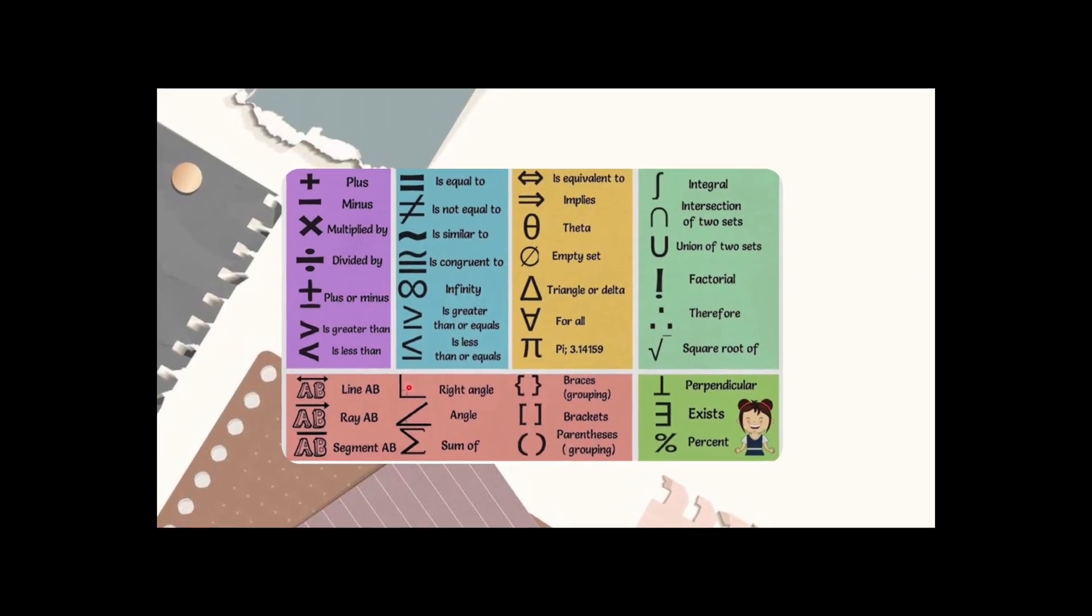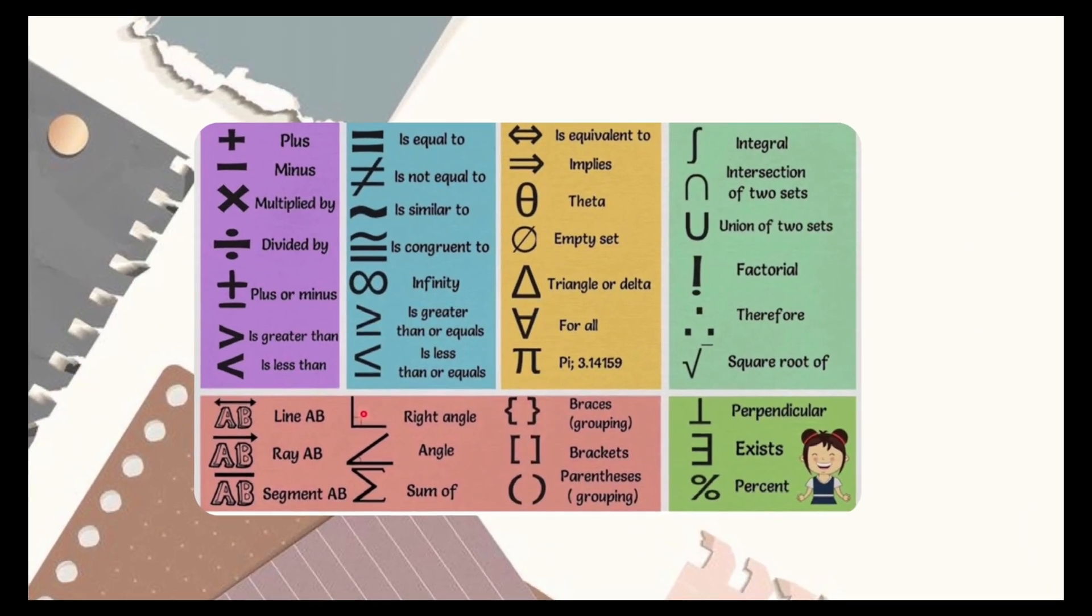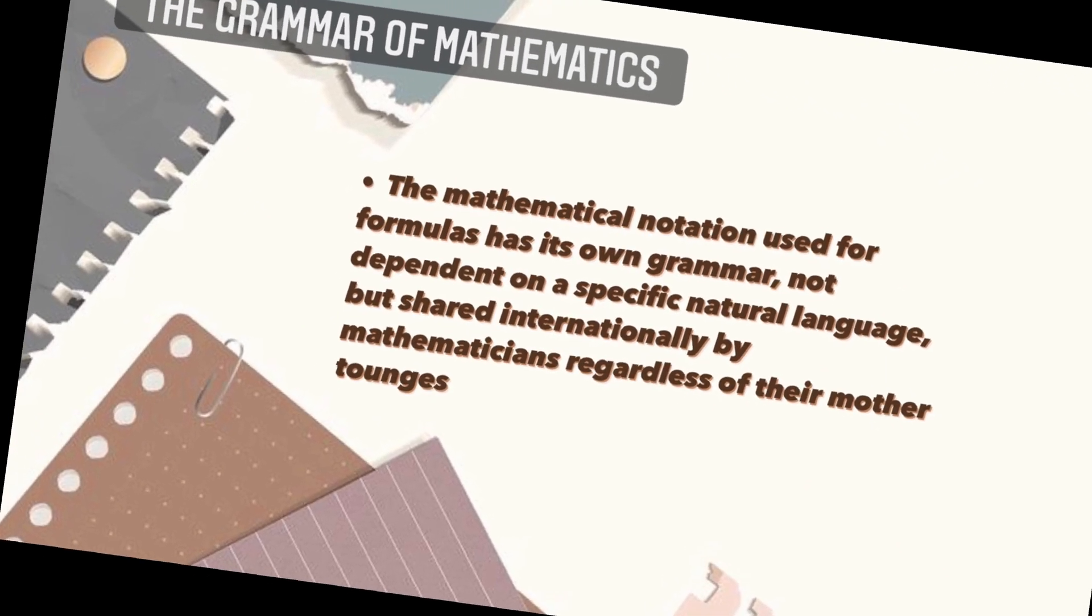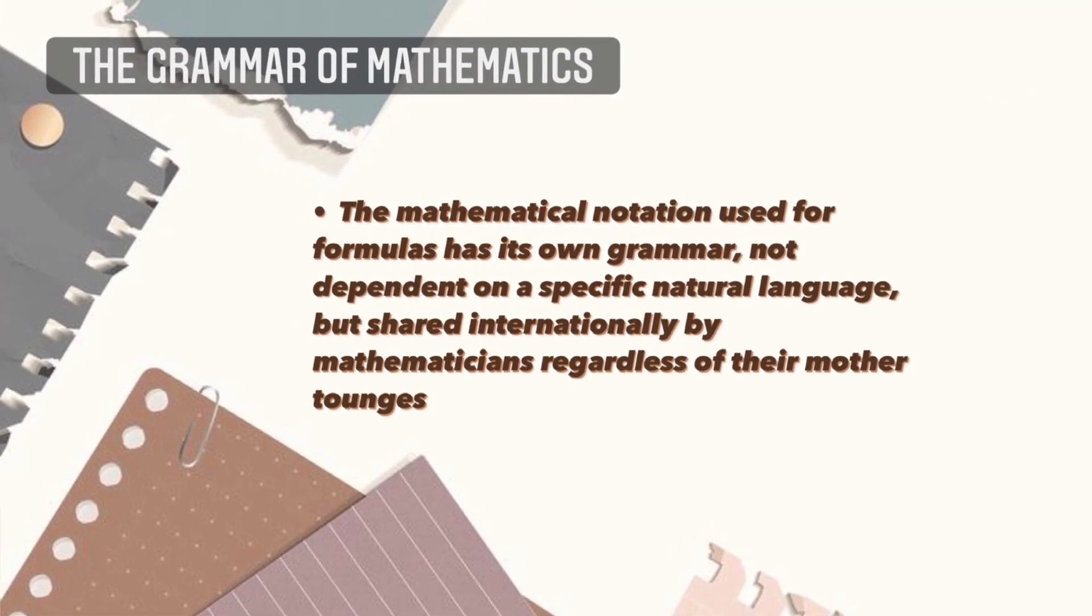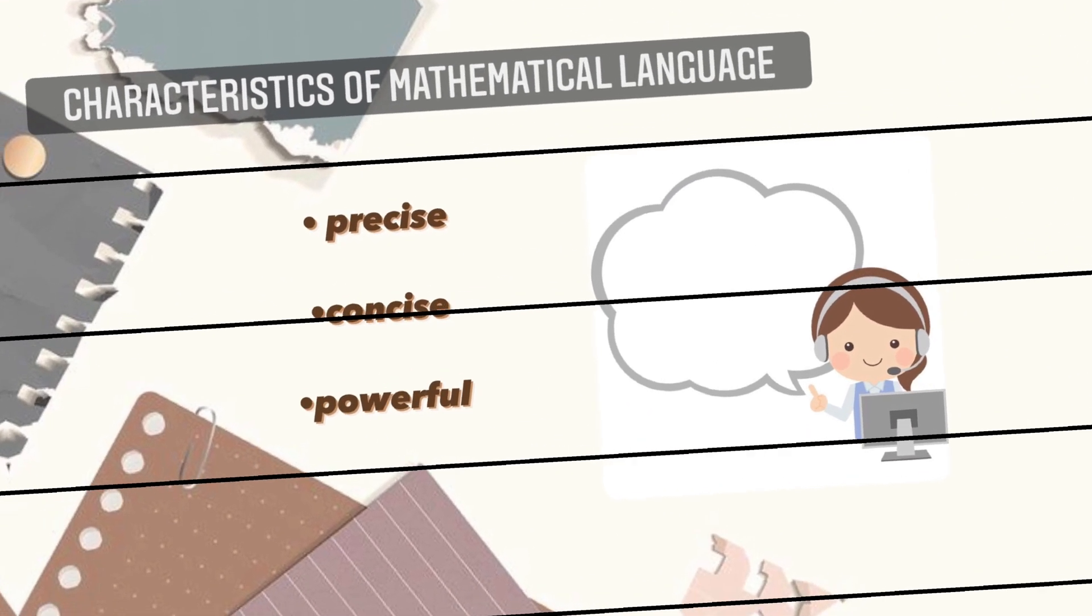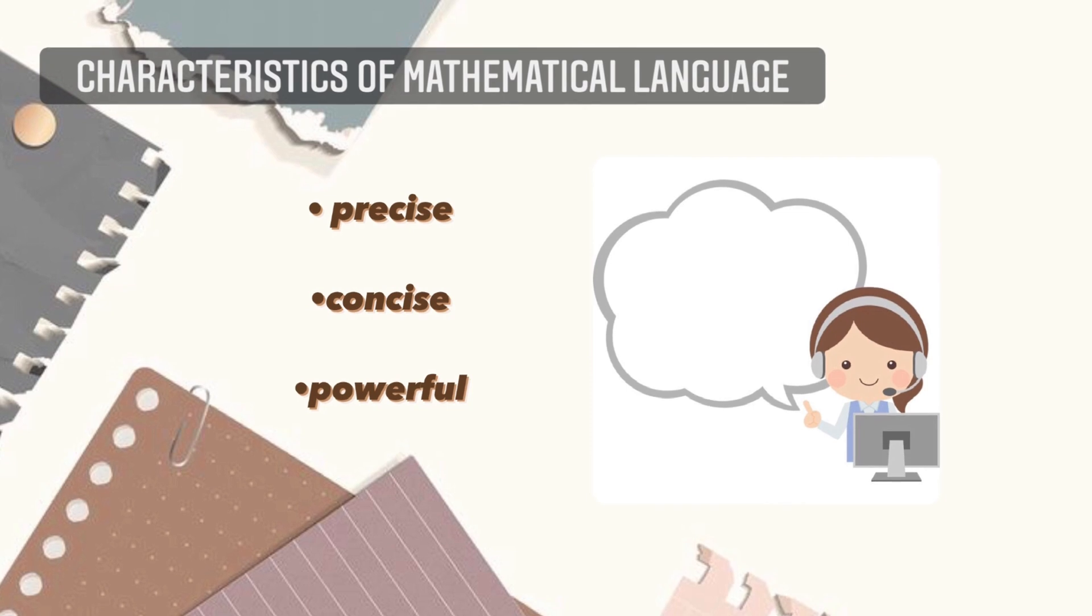Here are the common symbols that you are going to encounter. Now, let's proceed to the grammar of mathematics. The mathematical notation used for formulas has its own grammar, not dependent on a specific natural language, but shared internationally by mathematicians regardless of their mother tongue. Here are some characteristics of the mathematical language. First, it should be precise. Language should be accurate. It should have fine definition.